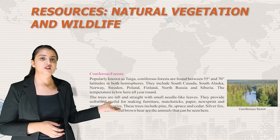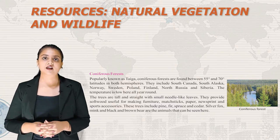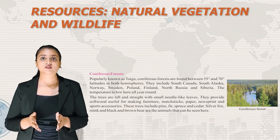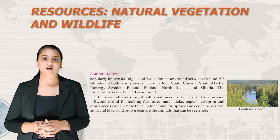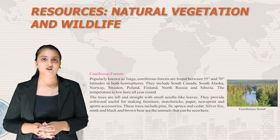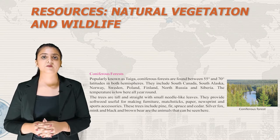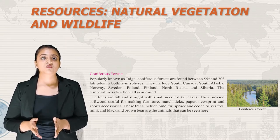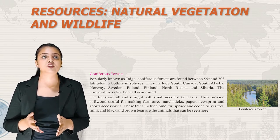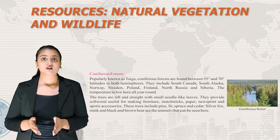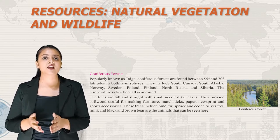Coniferous forests, popularly known as taiga, are found between 55 and 70 degree latitudes in both hemispheres, including South Canada, South Alaska, Norway, Sweden, Poland, Finland, North Russia and Siberia. The temperature is low throughout the year. Trees are tall and straight with small needle-like leaves and provide softwood useful for making furniture, matchsticks, paper, newsprint and sports accessories. Tree species include pine, fir, spruce and cedar. Silver fox, mink and black and brown bear are the animals found here.